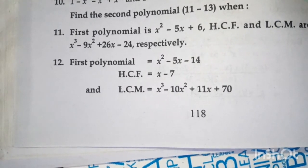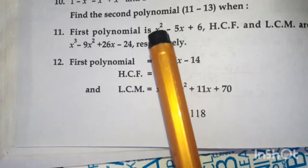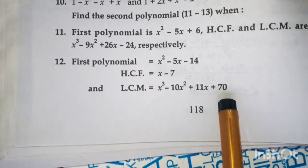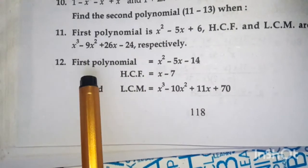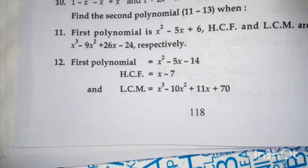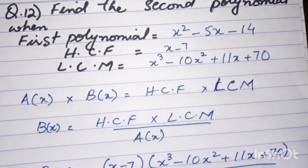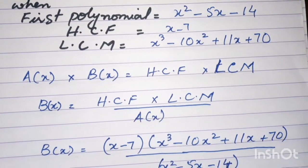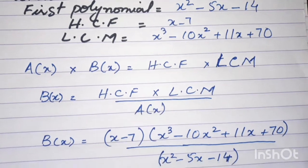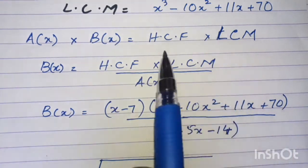Now question 12: the HCF is x minus 7 and the LCM is x cubed minus 10x squared plus 11x plus 70. The first polynomial, HCF, and LCM are given, and you have to find out the second polynomial. Using the formula a into b equals HCF into LCM, we find the value of b — the second polynomial.